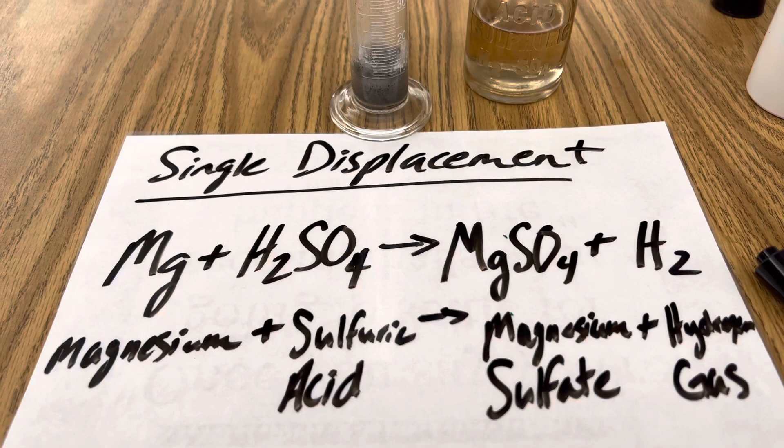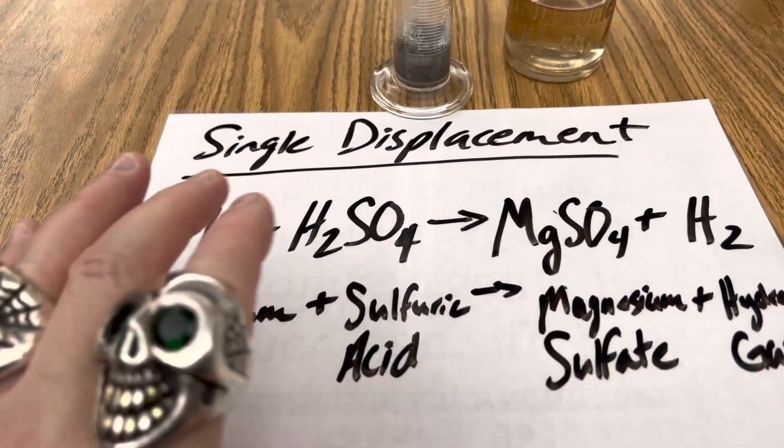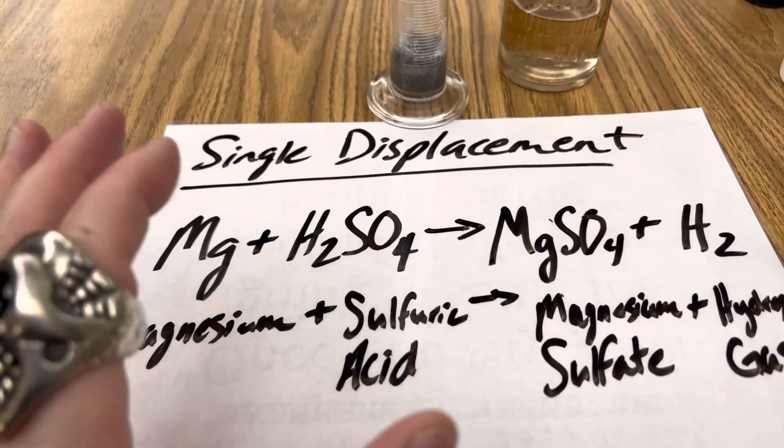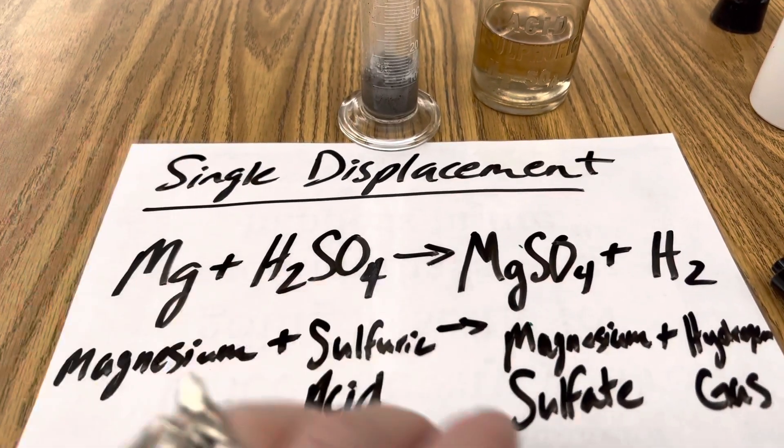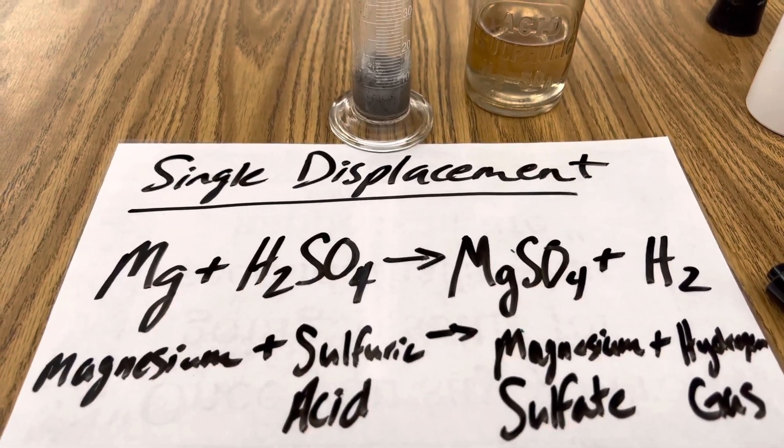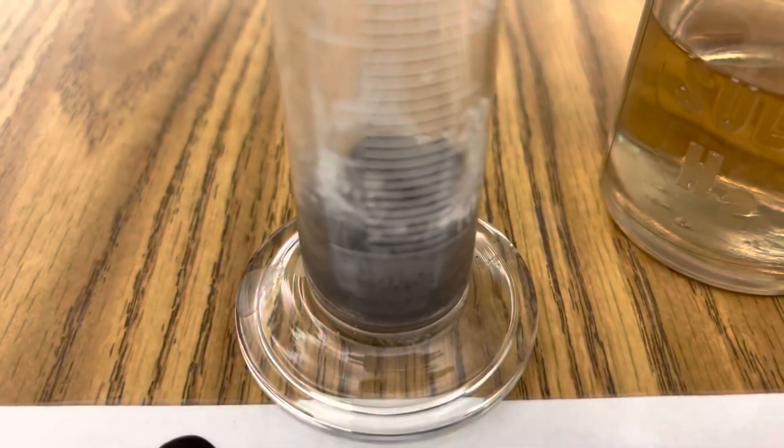Okay, so what's happening in this reaction is, of course, we started with our magnesium powder. We added that with our sulfuric acid, and that displaced hydrogen gas in this exothermic reaction. And the product was magnesium sulfate that you see at the bottom there.